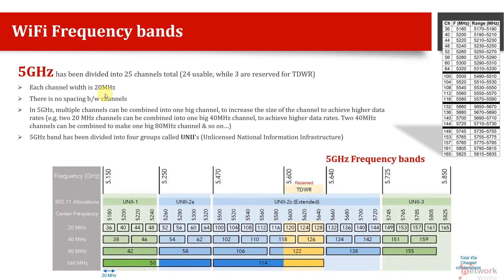Each channel width in 5 GHz, like in 2.4 GHz, is 20 MHz. For example, channel number 36 starts from 5170 MHz and goes up to 5190 MHz — meaning it is 20 MHz wide, not 22. We generally go with 20 MHz.